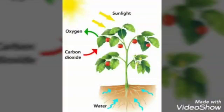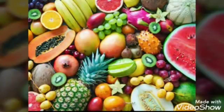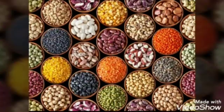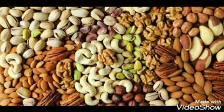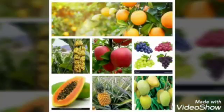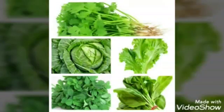Plants are major sources of our food. Plants give us fruits, vegetables, pulses, oil, nuts and many more things. We eat fruits of certain plants like orange, bananas, papaya, apples, mango, grapes, pineapple etc. We eat leaves of some plants like spinach, cabbage, lettuce, fenugreek and coriander. Leafy vegetables are good for our health.